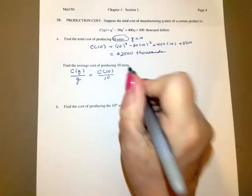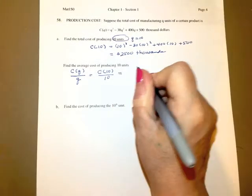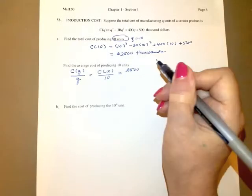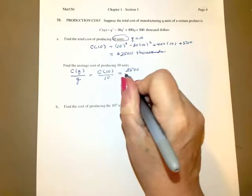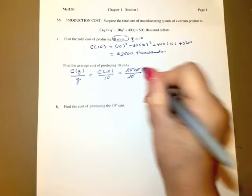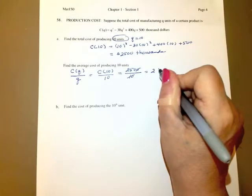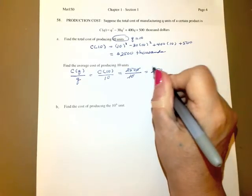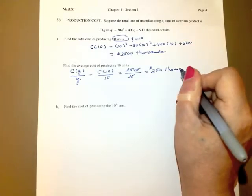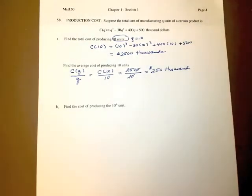Well, the cost of producing 10 units is 2500 thousand divided by 10. And the 10 takes that out. So this is going to be 250 thousand dollars.